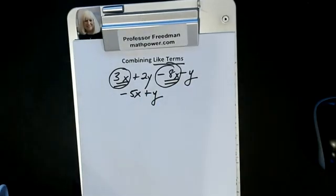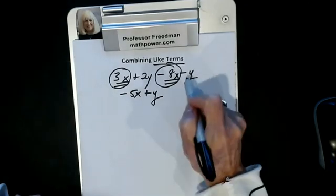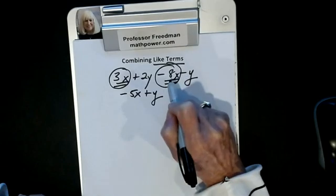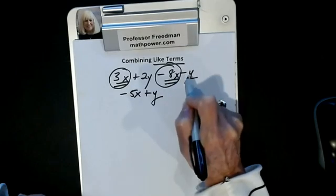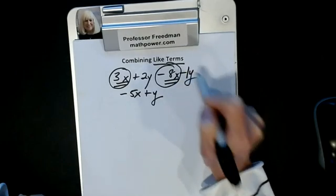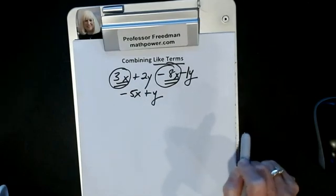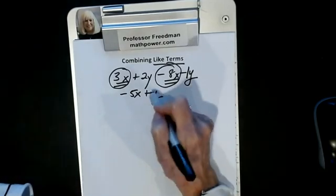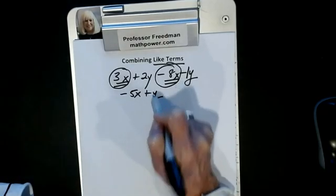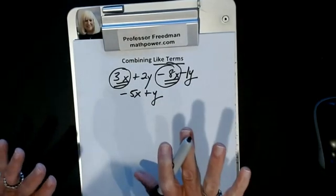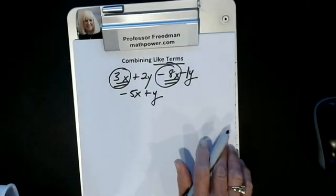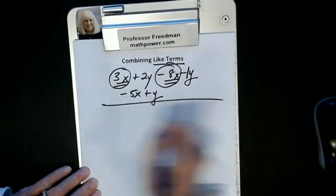Plus y — that's the answer. I can't combine x's and y's. There's no coefficient here; the number in front is called the coefficient. If there's no number in front, a one is understood — that's a common mistake people forget. So that's how I get plus 1y. If you want to put the 1 in, you can; it would never be marked wrong, but ones are understood as coefficients.